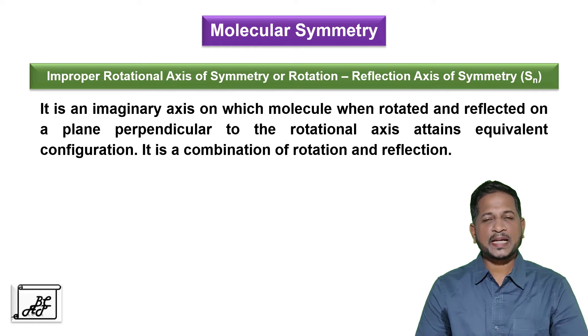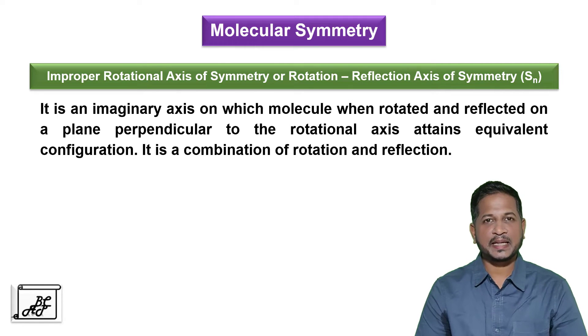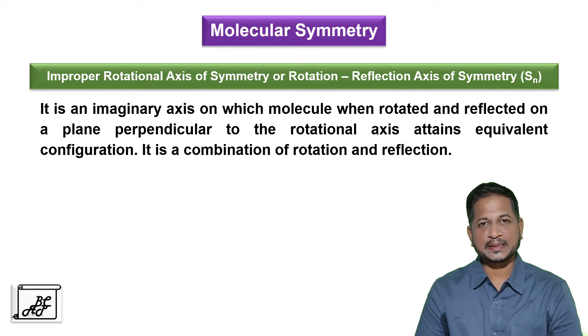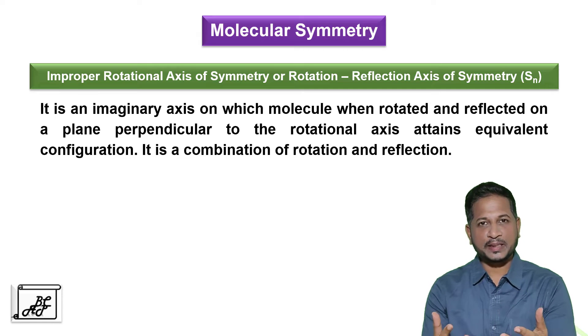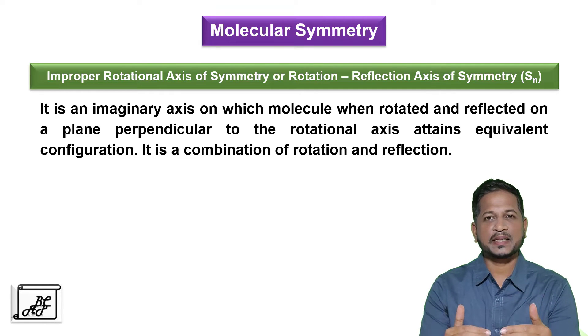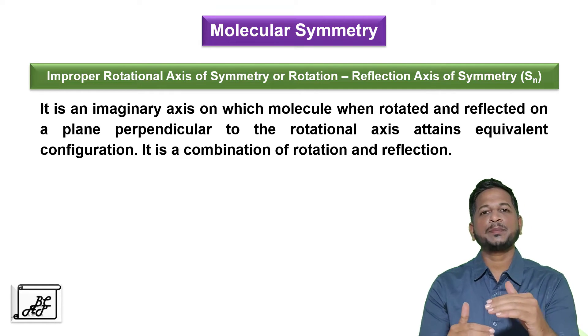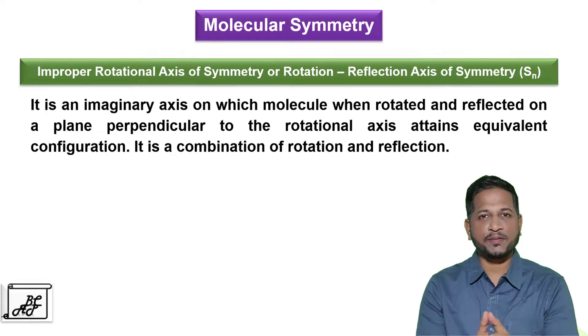Improper rotational axis of symmetry is defined as an imaginary axis around which a molecule is rotated first, and then a reflection is taken in a plane perpendicular to the rotational axis to get an equivalent image.